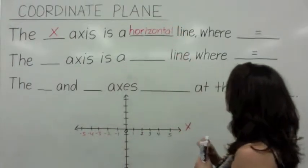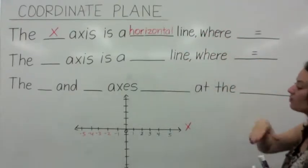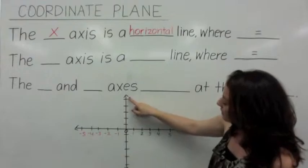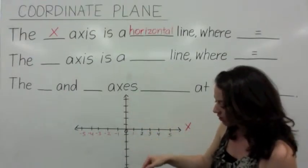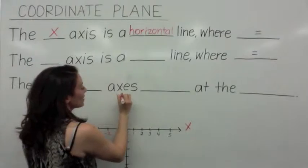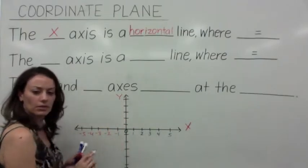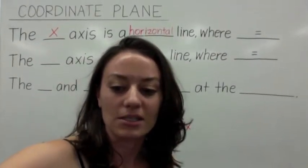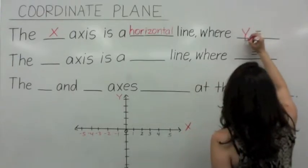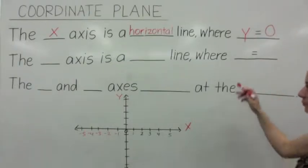Now, the x-axis is a horizontal line. I'm going to ask you a question. If I'm on the x-axis, there is another axis. Do you know what it's called? What's this one called? If it's not x, then it's the y-axis. If I am on the x-axis — on this horizontal line — am I on the y-axis? No. I'm not on the y-axis. So in this situation, if you're actually on the x-axis, your y is going to equal zero.